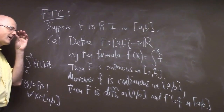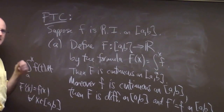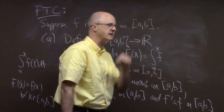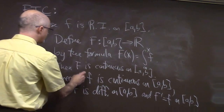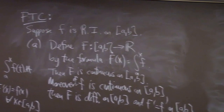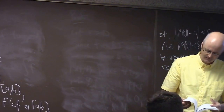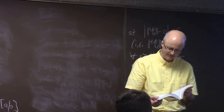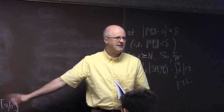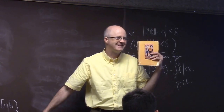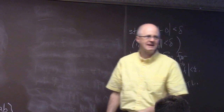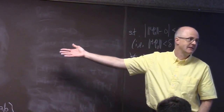Actually, the way the book phrases it, they emphasize little f being continuous at a point — capital F is differentiable at all points where little f is continuous, and at those points capital F prime equals little f. So the book's version is a bit stronger. You should know theirs for the test. I would lose a point writing it my way since it's not quite as strong as the book statement, though it's still true.